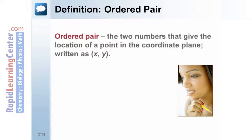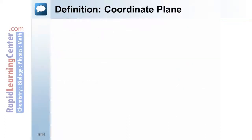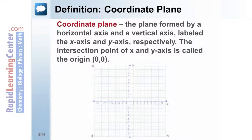Definition — ordered pair: an ordered pair is the two numbers that give the location of a coordinate point in the coordinate plane. An ordered pair is written as (x, y) in parentheses. Caution: the numbers of an ordered pair cannot be interchanged — (x, y) is not the same as (y, x).